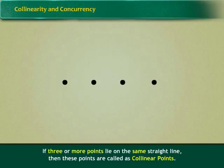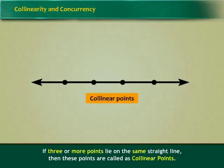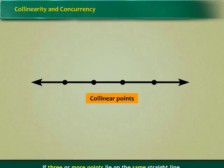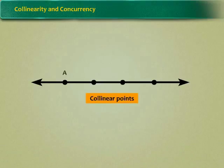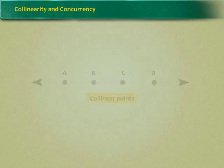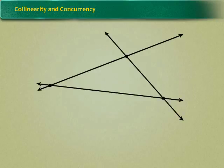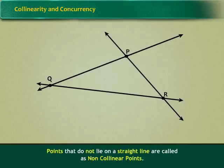Let us learn more about points and lines. If three or more points lie on the same straight line, then these points are called as collinear points. Here the figure shows that points A, B, C and D all lie on the same line. Therefore, they are collinear points. While in this figure, we see that points P, Q and R do not lie on a straight line. So these points are called as non-collinear points.